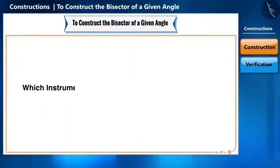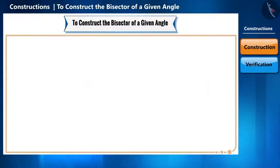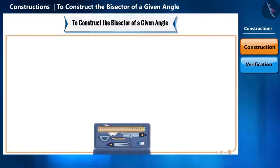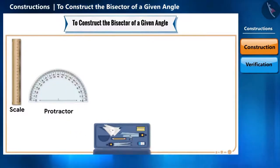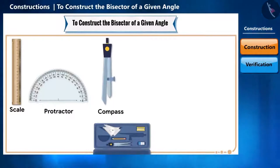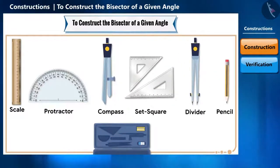Friends, can you tell which instruments we need for geometric constructions? We have a geometry box, which contains a graduated scale, a protractor, a pair of compasses, a pair of set squares, a pair of dividers and a pencil.